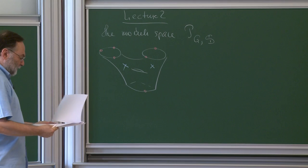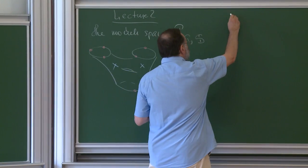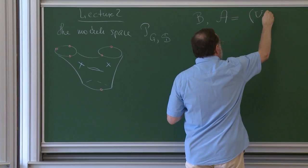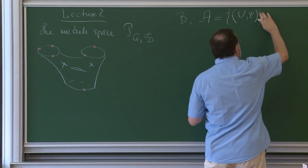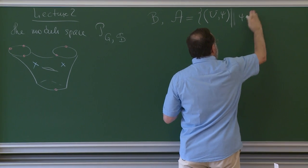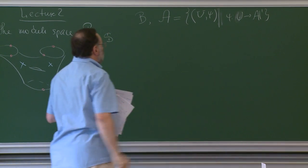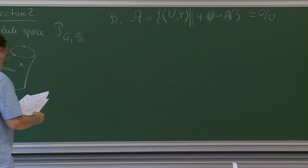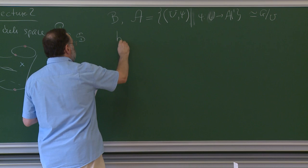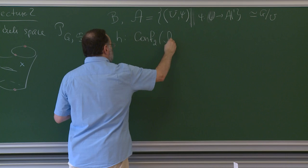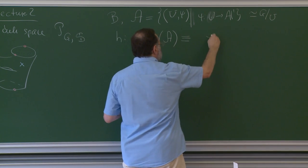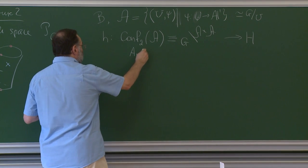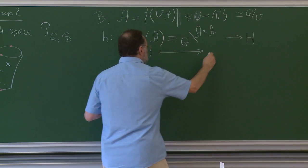Last time we defined two important varieties. First, there was a flag variety B. Second, there was a principal affine space A, which is the moduli space of pairs U and Psi, where U is a maximal unipotent subgroup and Psi is a non-degenerate character of U. This space is isomorphic to G mod U.